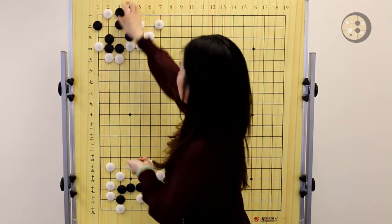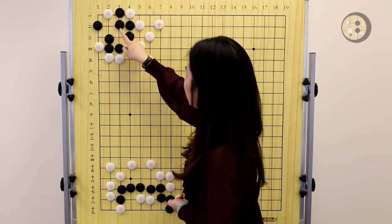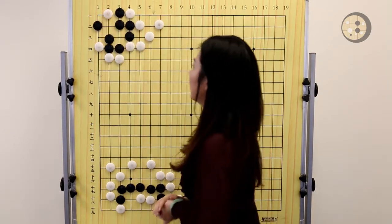Because white can never save this stone in the corner. You have one eye over here and one eye in the corner. That's the answer for the first question.